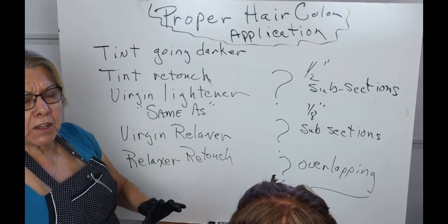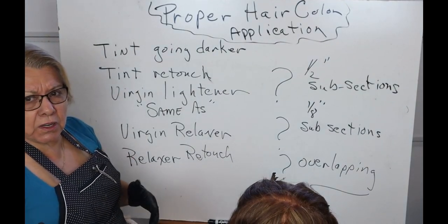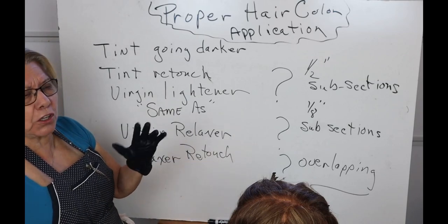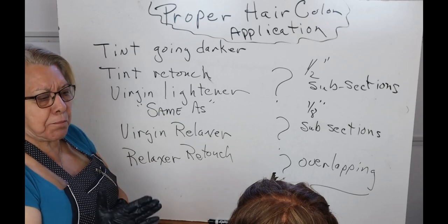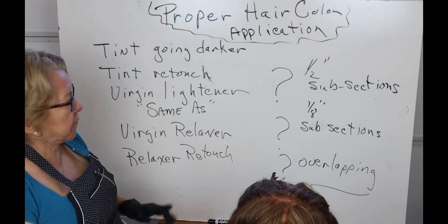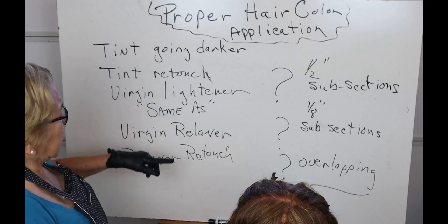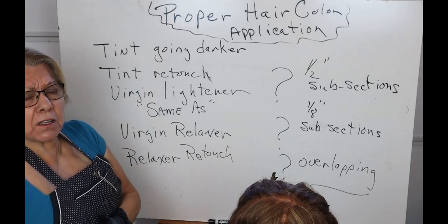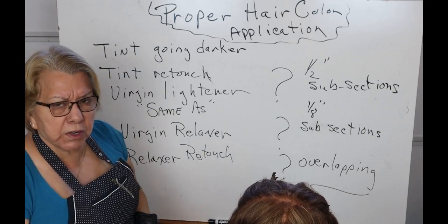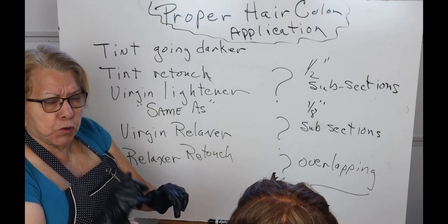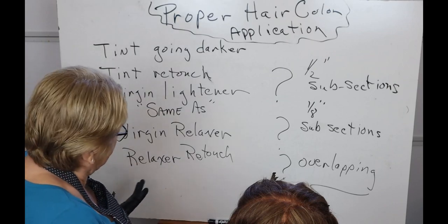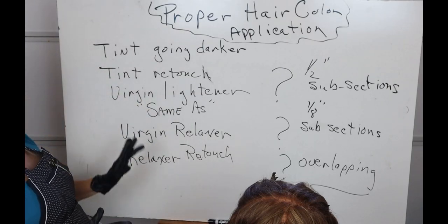You have tint going darker and tint going lighter. The tint going lighter procedure is similar to virgin lightener — these are just certain names but they're procedures and applications. Today we're going to do a virgin lightener application first, then a retouch, and then tint going darker. What's fascinating is that a virgin relaxer is applied exactly the same as a virgin lightener.